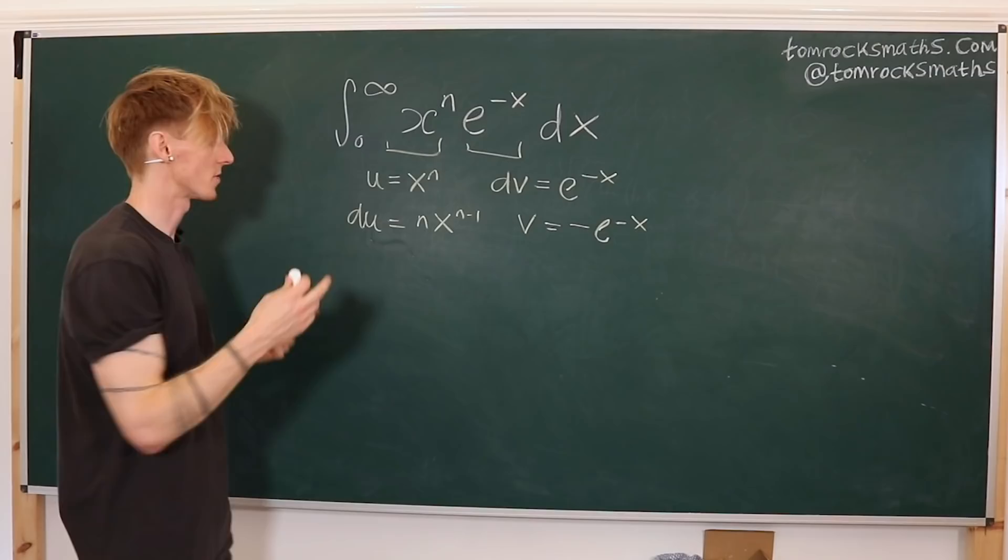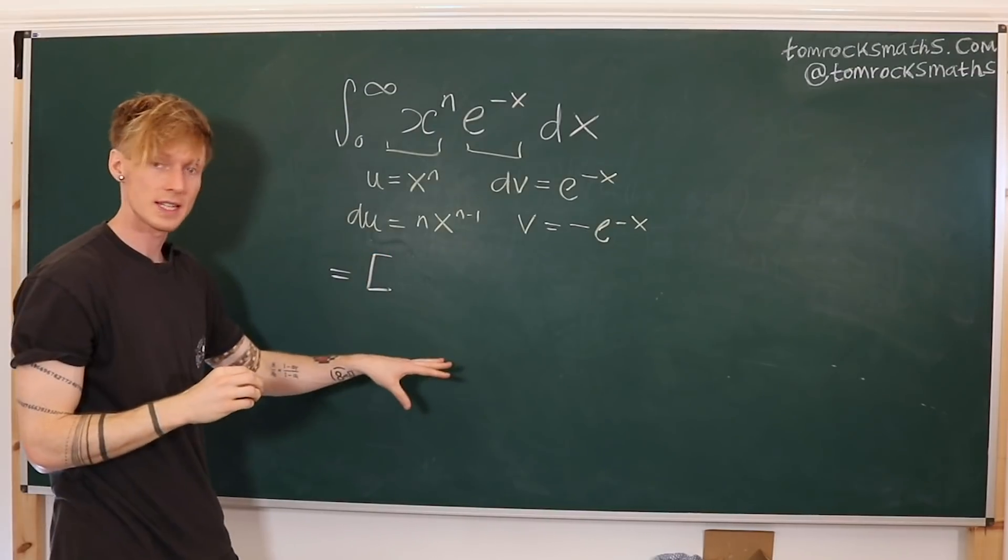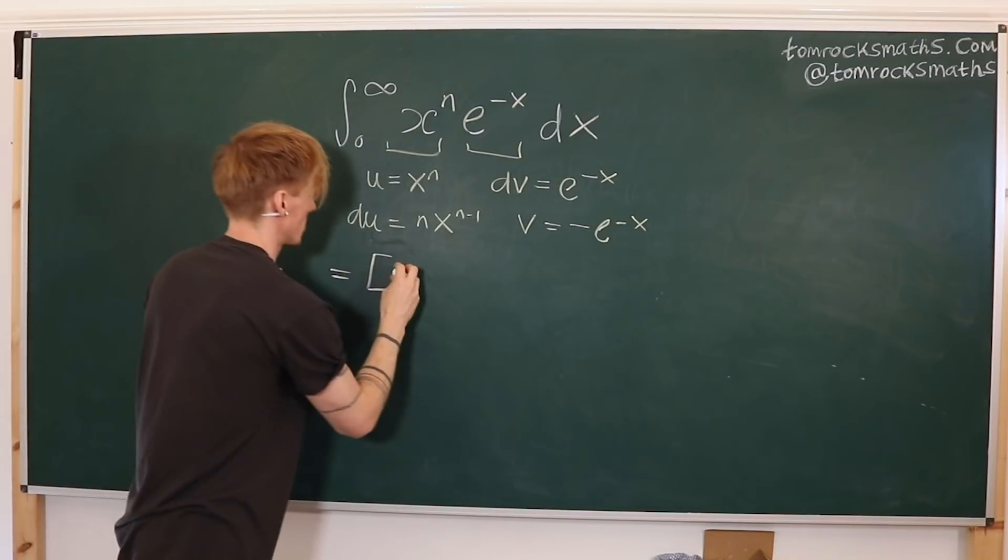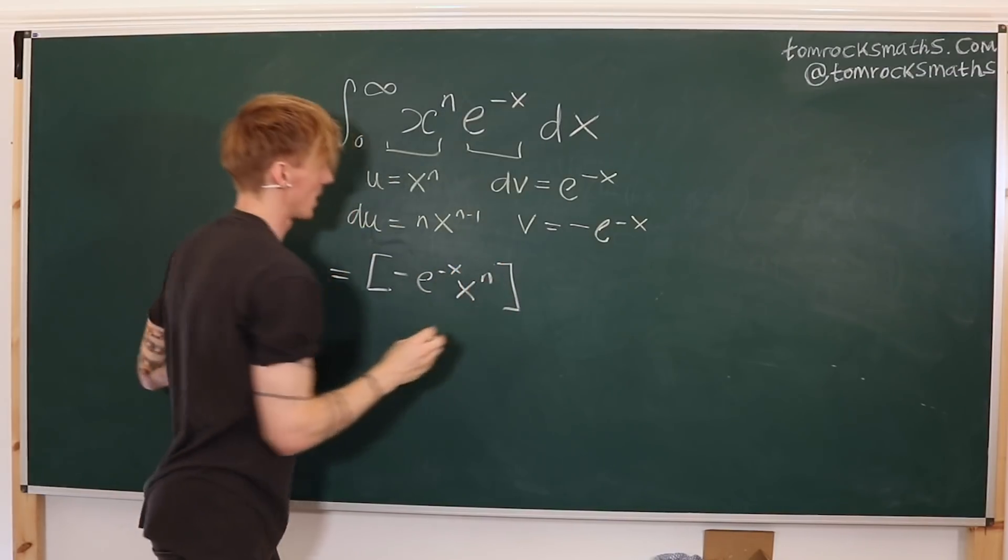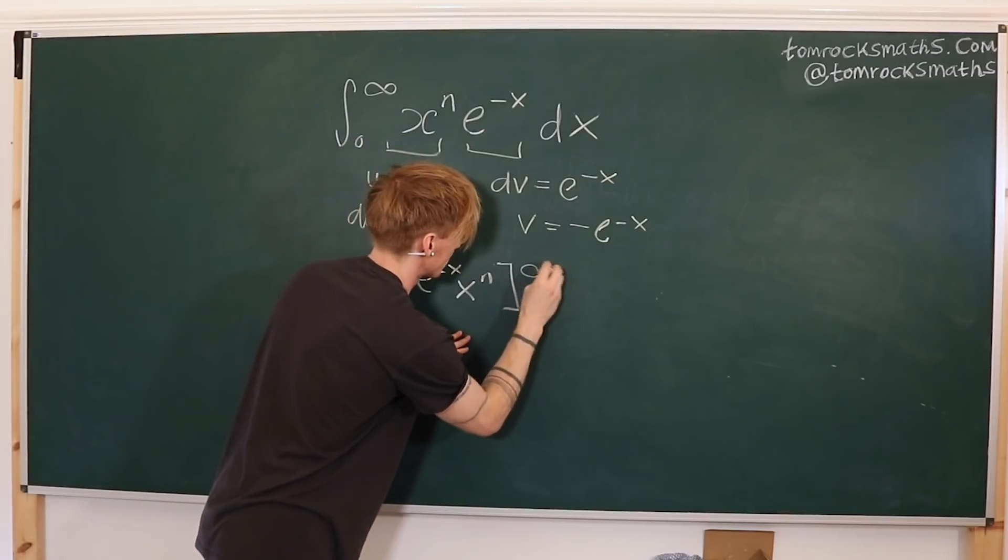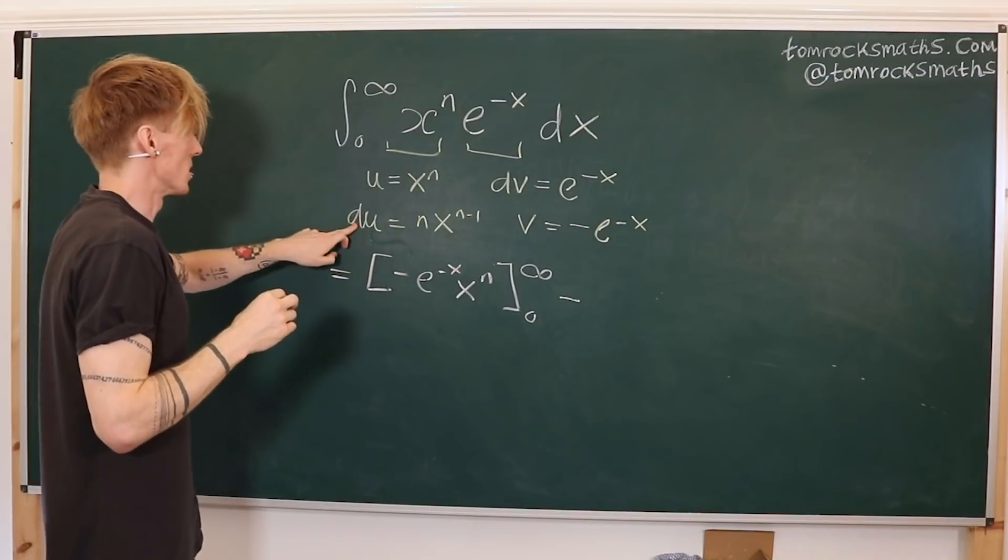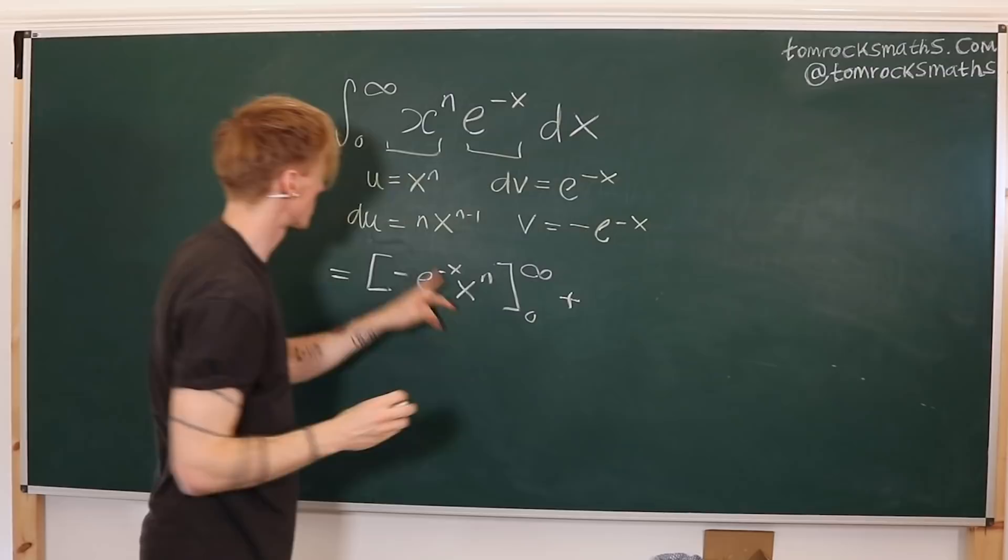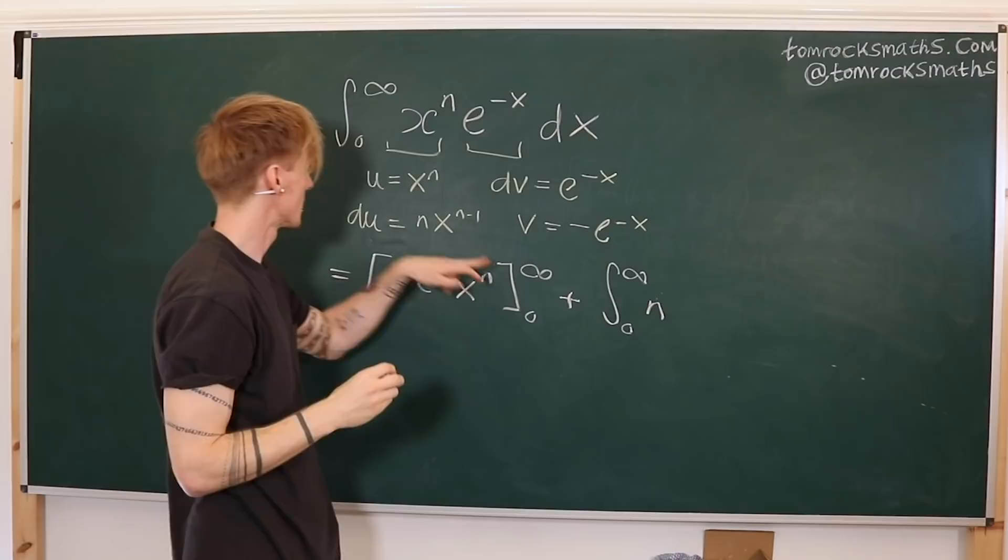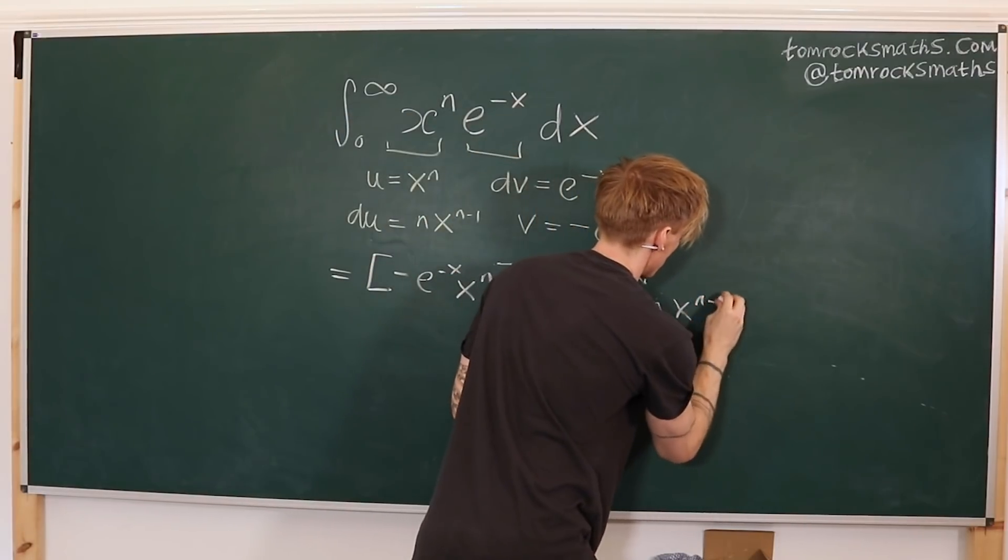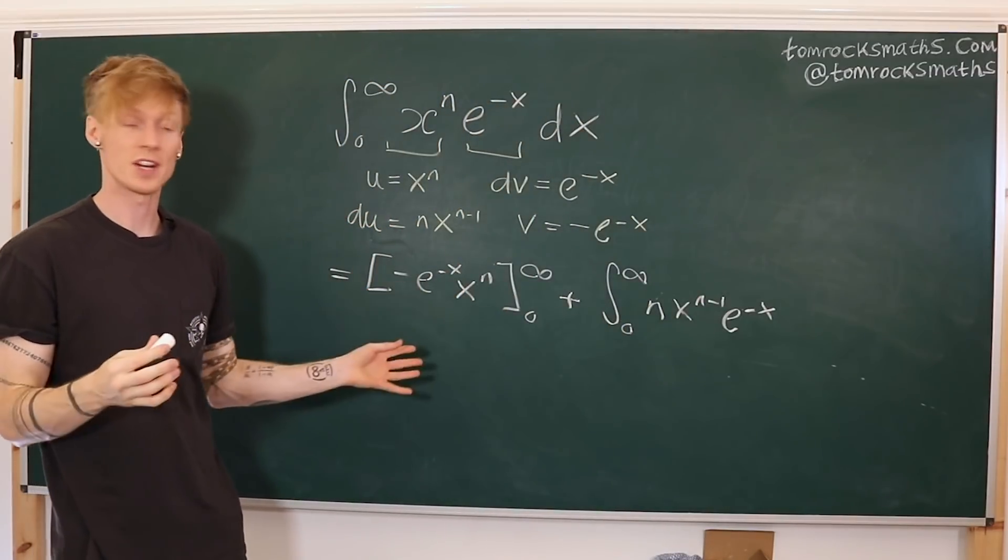Now using my integration by parts formula, this is equal to u dv is equal to the integrated part u v. So that's minus e to the minus x, x to the power of n, evaluated at 0 and infinity. And then it's minus the integral of du times v. So minus minus gives me a plus. And then I've got the integral from 0 to infinity of n, x to the n minus 1, e to the minus x. So after one step of integration by parts, it looks as follows.